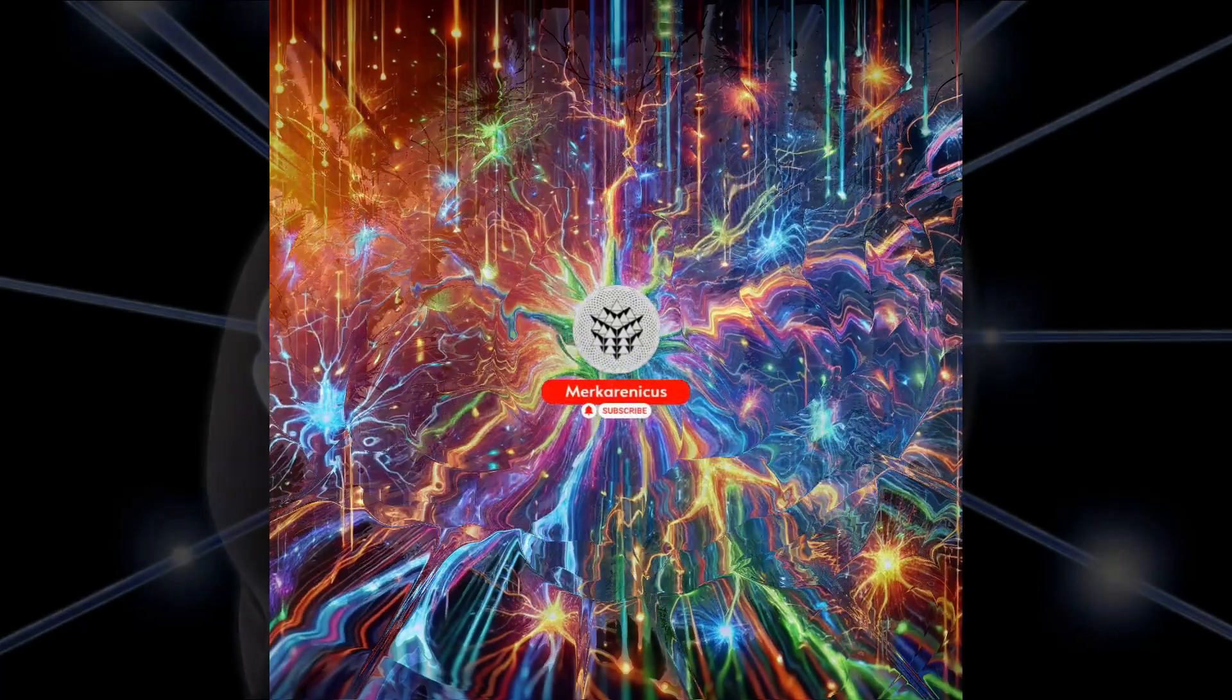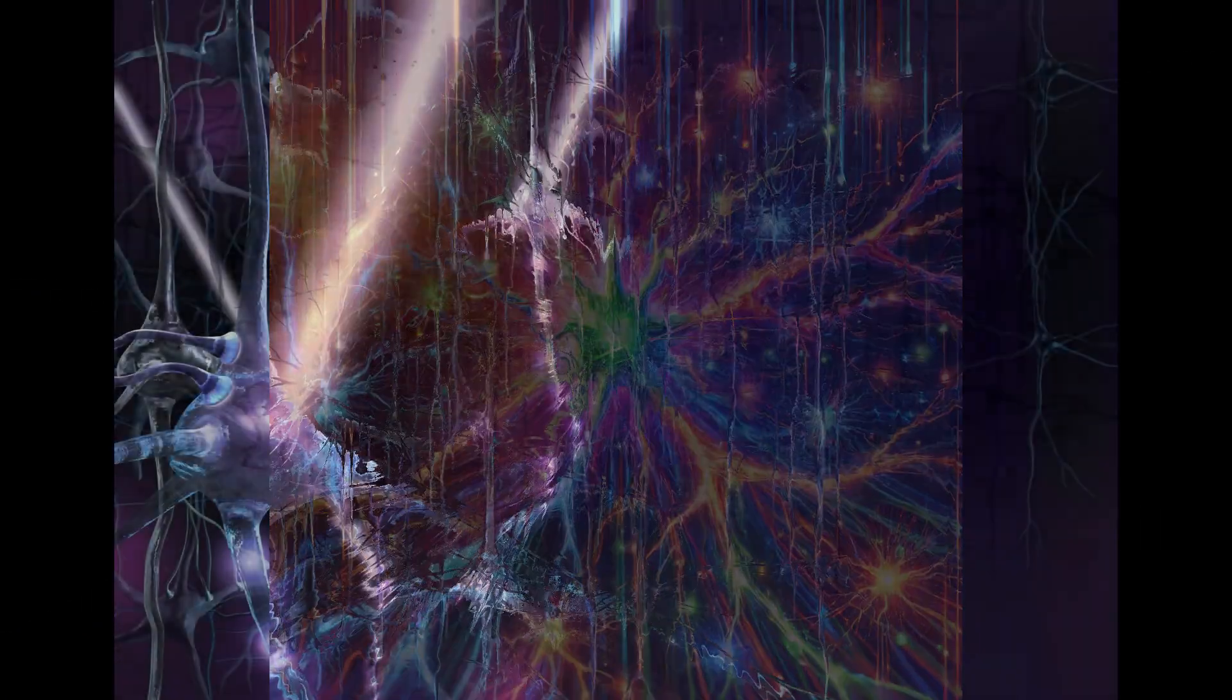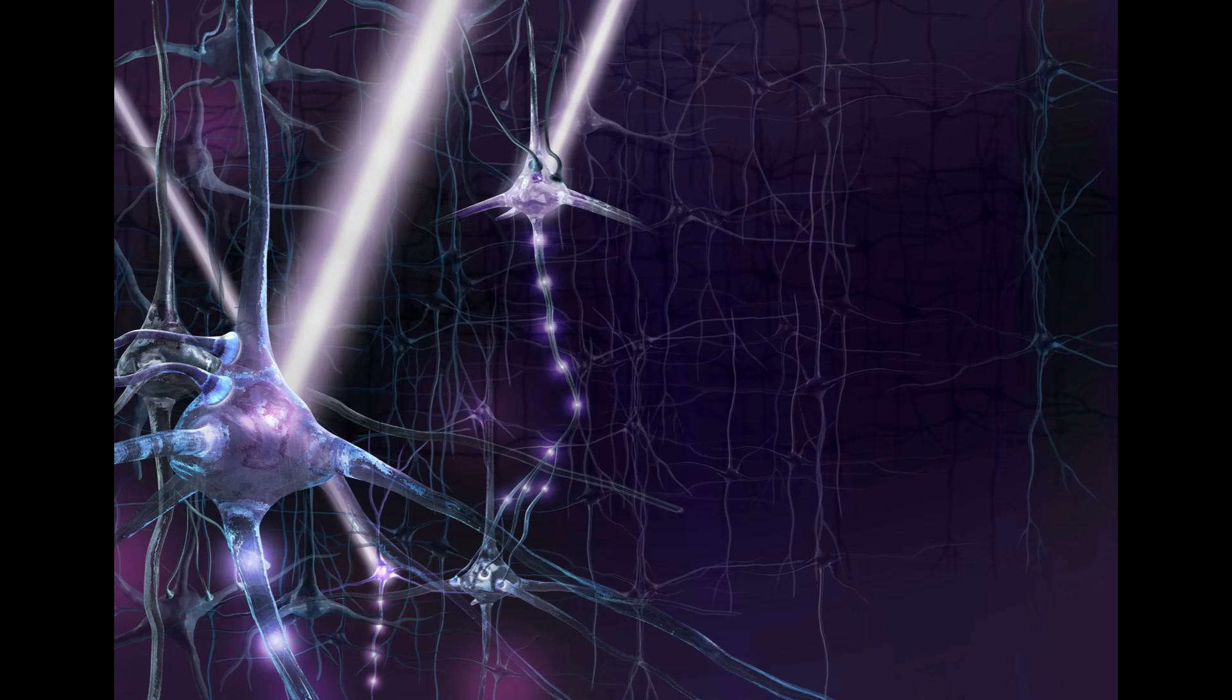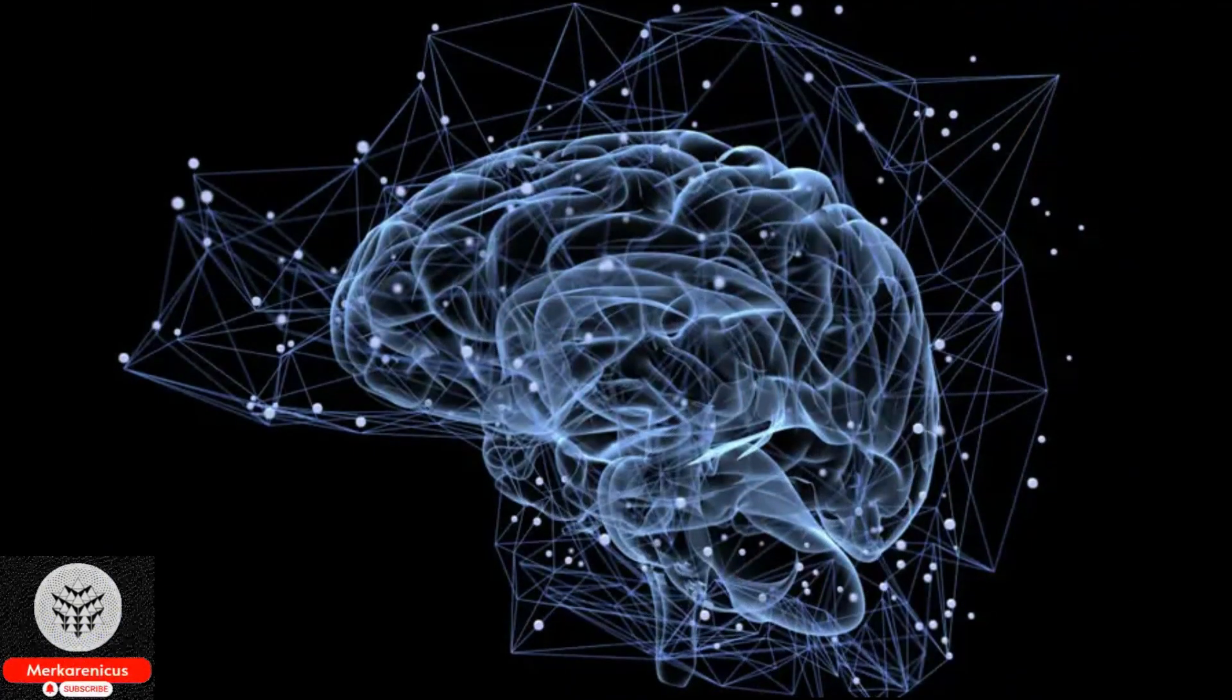In order to illuminate the brain, researchers require several instruments. The primary tool is optogenetics, a well-established research method that employs light to either activate or inhibit cellular activity within the brain.